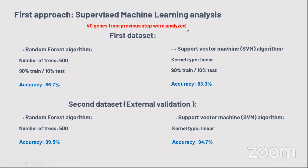I then performed supervised machine learning analysis using those 40 genes. The performance with the first dataset wasn't as good as expected — the number of samples was reduced, causing some difficulties with the algorithm. However, during validation using the second dataset with a larger number of samples, the accuracy improved to around 90%. So I believe these genes with the machine learning algorithm perform well.